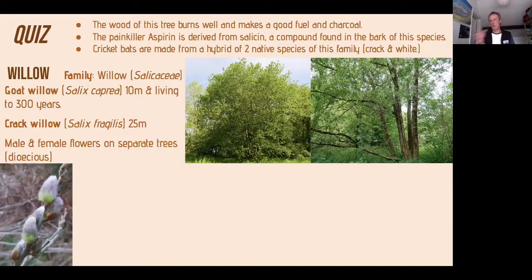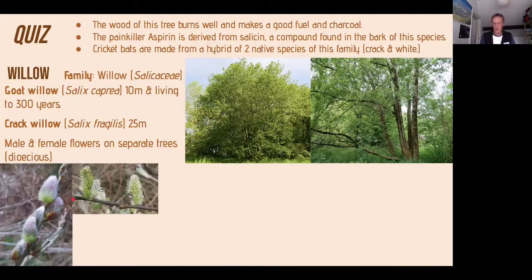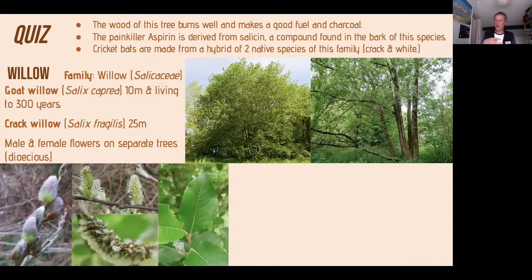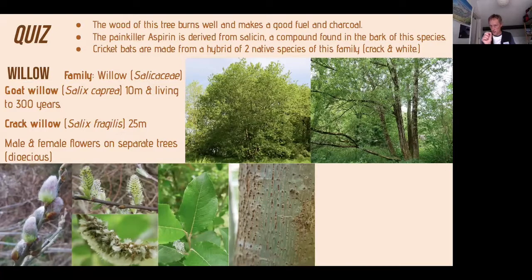All willows have male and female trees. Early in spring you see the pussy willow — the goat willow's male flowers that look like cat's paws. Those male flowers develop and the female flower becomes white and fluffy, dispersed by wind. The leaf of the goat willow is fairly rounded. The bark has diamond-shaped holes called lenticels — breathing pores that allow gases to move in and out, especially important in wet areas.